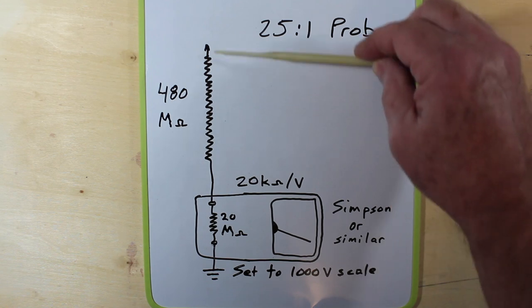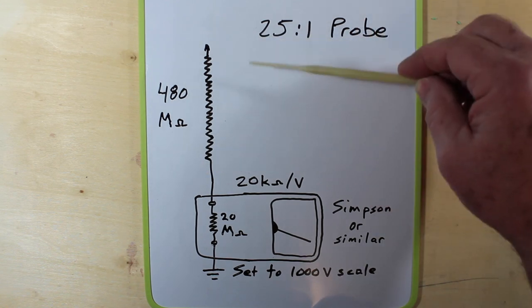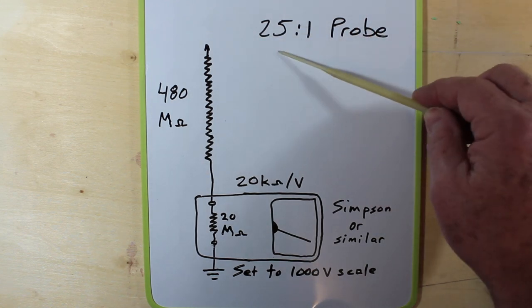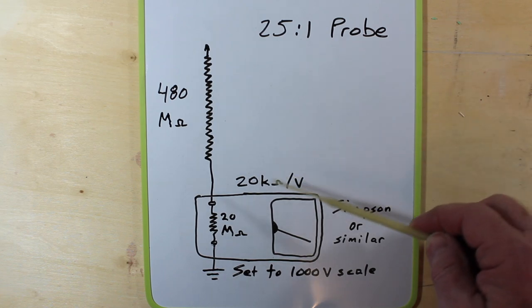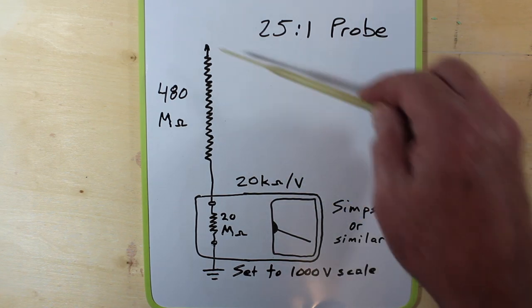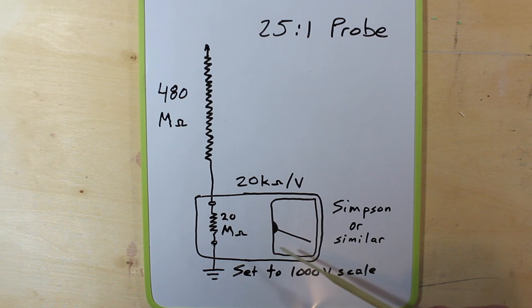That 20 mega ohm in series with the 480 that's in the probe, the 480 megs, gives us a 25 to 1 situation. So when we have 25,000 volts here, this will be full scale on the 1,000 volts because it's divided down by 25.